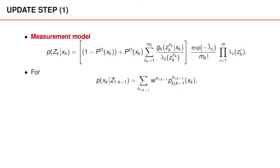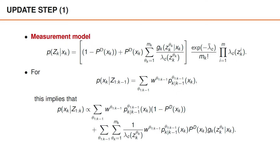The predicted density is instead a sum with one term for every possible sequence of associations up to time k-1. As usual, the posterior at time k is proportional to the predicted density times the likelihood function. Since both the predicted density and the likelihood contain a summation, the product contains one term for every pair of terms in the two factors.